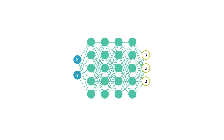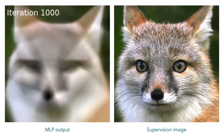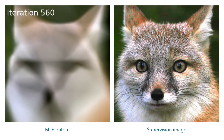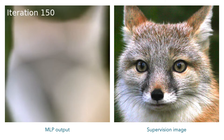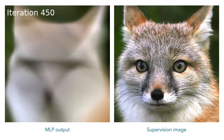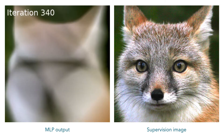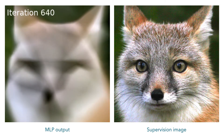One simpler example of this is using an MLP to represent an image, taking in the 2D pixel coordinate as input and outputting an RGB color. Here's what happens over the course of training an MLP to represent this signal. As you can see, the network struggles to learn high-frequency details like the fur on this box.